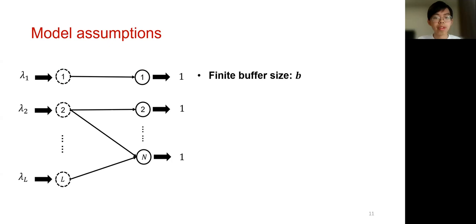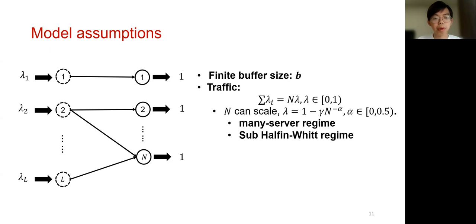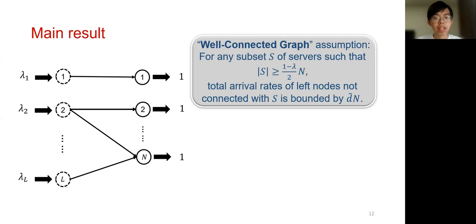To formally introduce our results, let us make some assumptions of the model and have some simplification. First, let us restrict our scope to the case of homogeneous servers, and later we will extend the result to the heterogeneous case. In this model, we assume that each server will have a finite buffer size and denote the sum of all arrival rates to be n times lambda. Then we will assume that n will scale to infinity, and lambda can be written as 1 minus gamma times n to the minus alpha, where alpha is a constant between 0 and 0.5. This traffic load regime can represent the classical many-server regime and also the recently proposed sub-Halfin-Whitt regime.